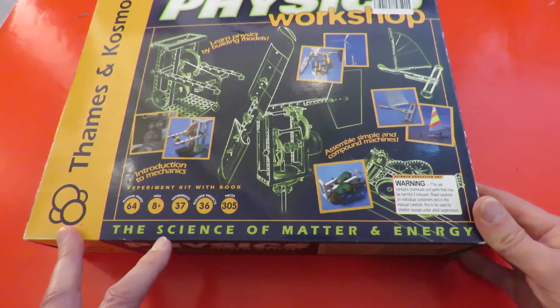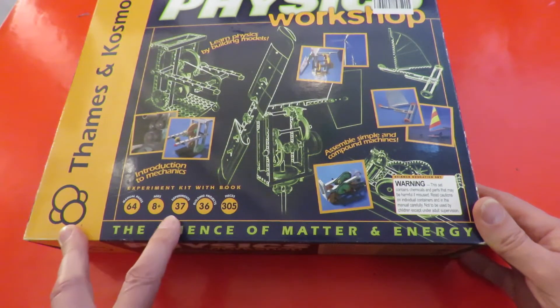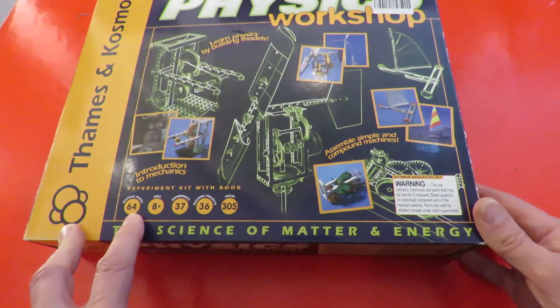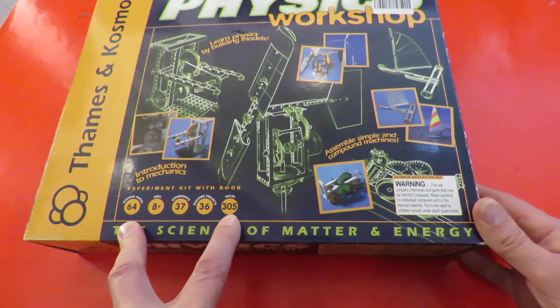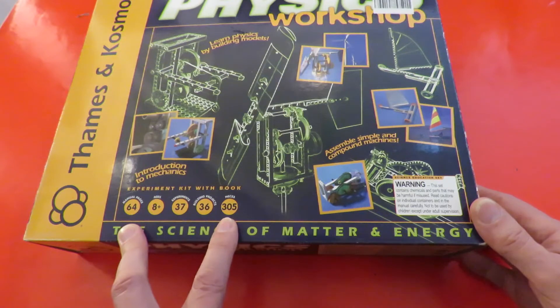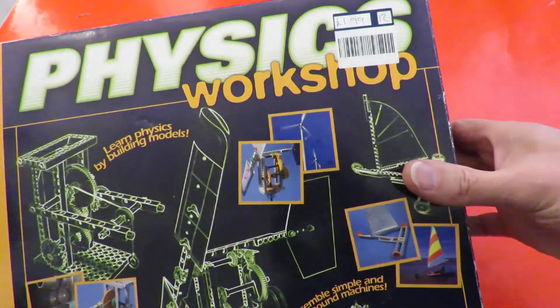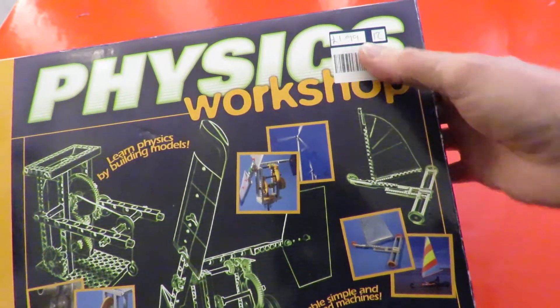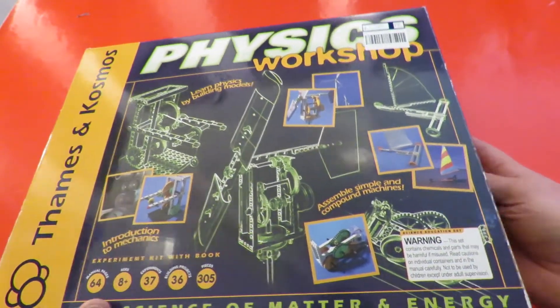The Science of Matter and Energy. 64-page manual. 37 experiments, 36 built-in projects, 305 pieces. Introduction to Mechanics. It was only £1.99 and I thought well at that price I probably couldn't buy a set of gears for that.